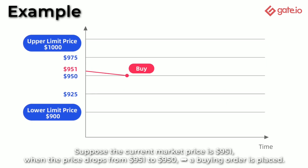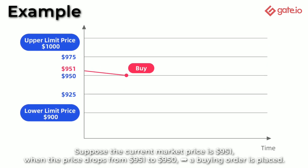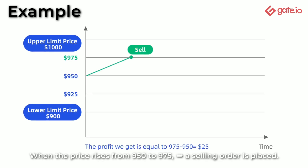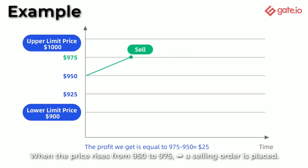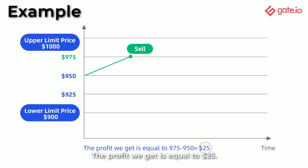For example, suppose the current market price is 951 USD. When the price drops from 951 to 950, a buying order is placed. When the price rises from 950 to 975, a selling order is placed. The profit we get is equal to 25 USD.